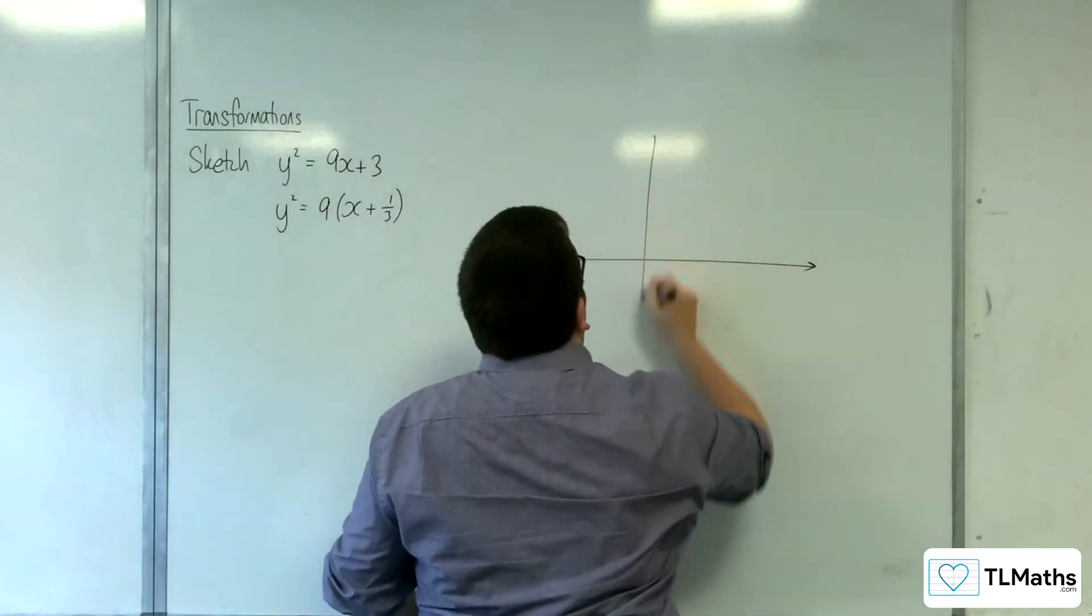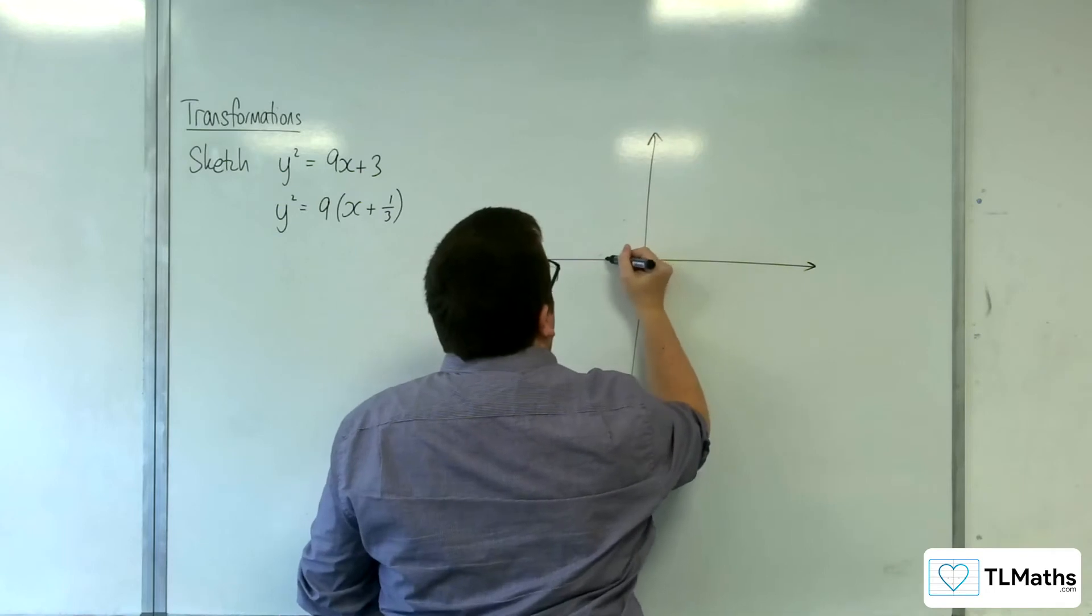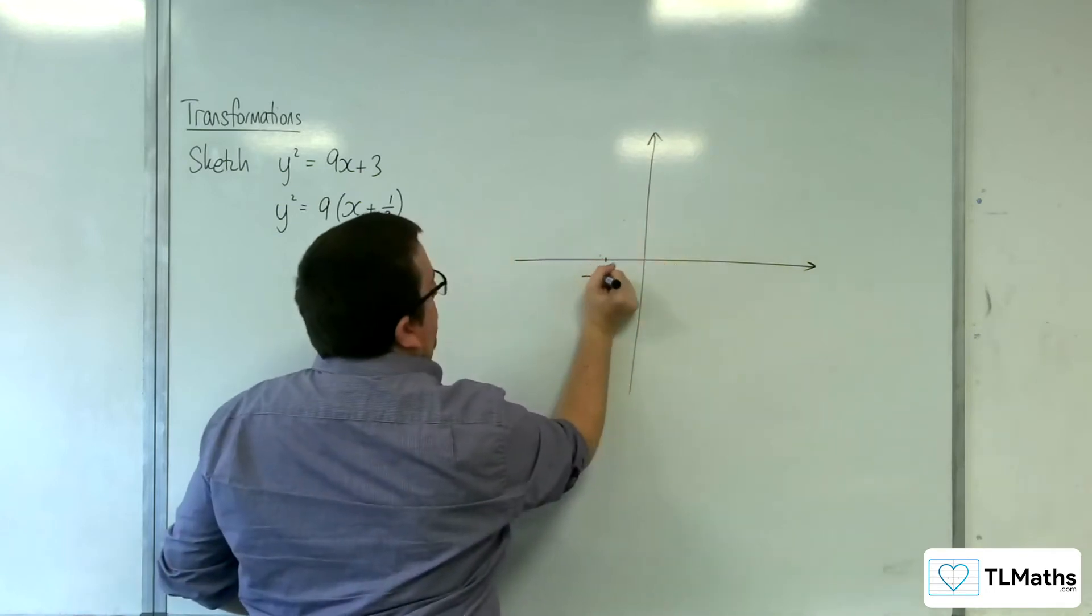So when I sketch this, I know that the vertex is at minus 1 third.